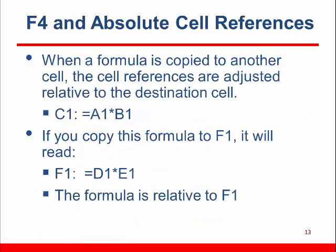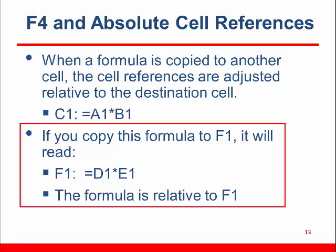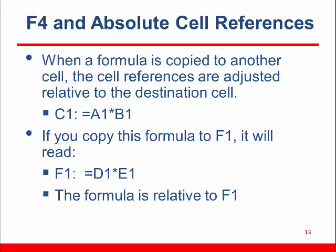As you just saw in the previous example, when a formula is copied, the cell references in it are adjusted based on the destination cell. In our C1 formula, if our C1 formula were copied to F1, it would read D1 times E1. This is powerful and extremely useful, but sometimes you want to copy formulas and you don't want all or some of the cell references to change.